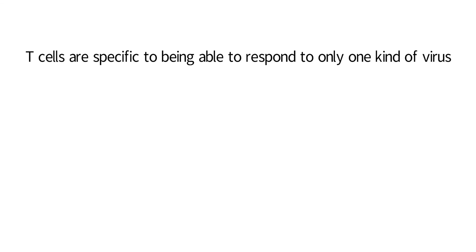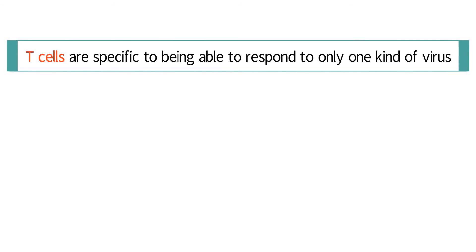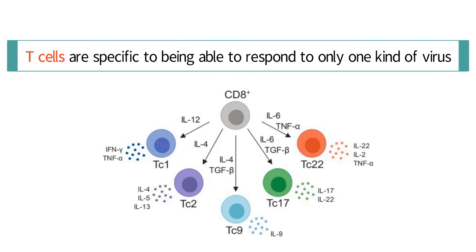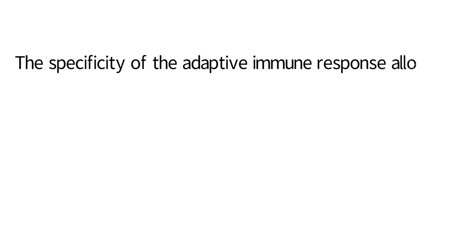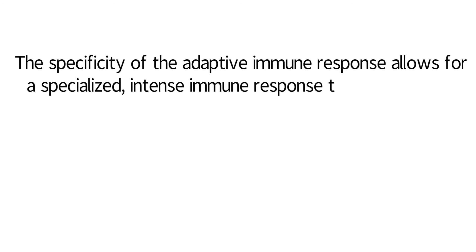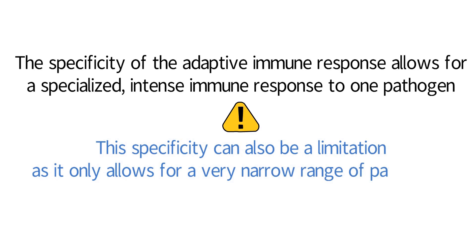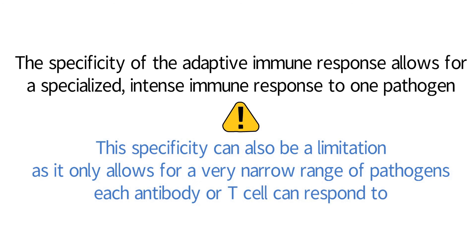As is the case with antibodies, T cells are specific to being able to respond to only one kind of virus. There are numerous T cells, however, and an array of viral infections are able to be contained due to the variety of T cells in the human body. The specificity of the adaptive immune response allows for a specialized, intense immune response to one pathogen. However, this specificity can also be a limitation as it only allows for a very narrow range of pathogens each antibody or T cell can respond to.